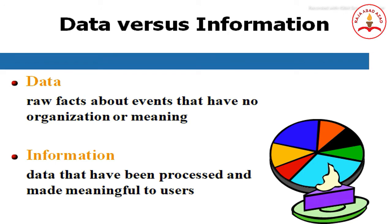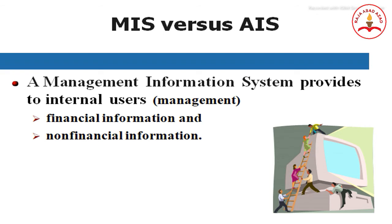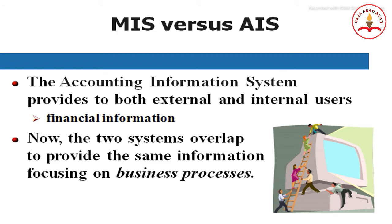Data refers to raw facts about events that have no organization or meaning. Information is data that has been processed and made meaningful to end users. A management information system provides internal users or management with financial and non-financial information, while the accounting information system provides both external and internal users with financial information. These two systems overlap to provide the same information, both focusing on business processes.